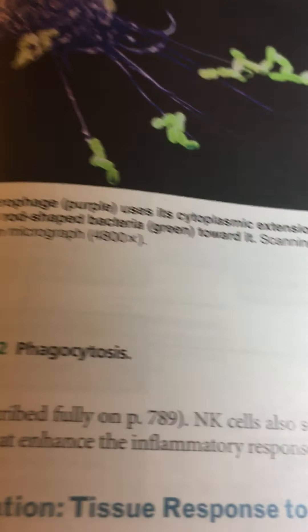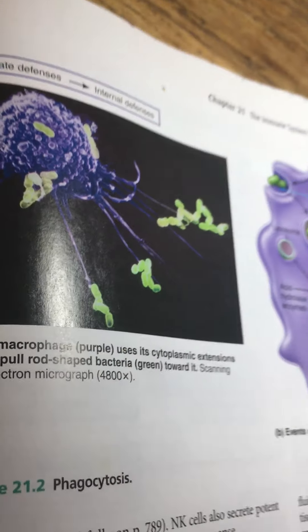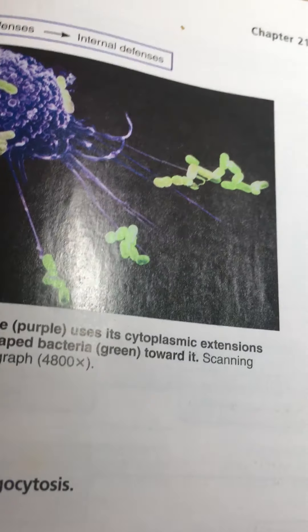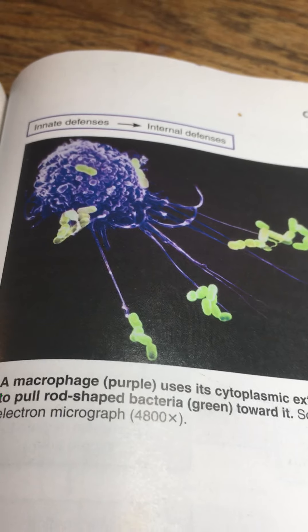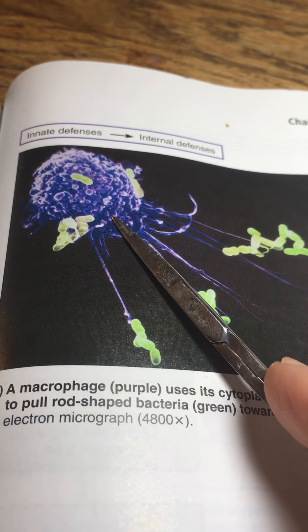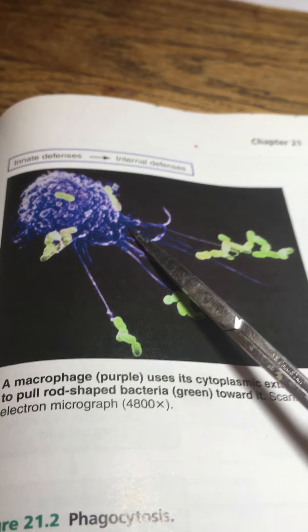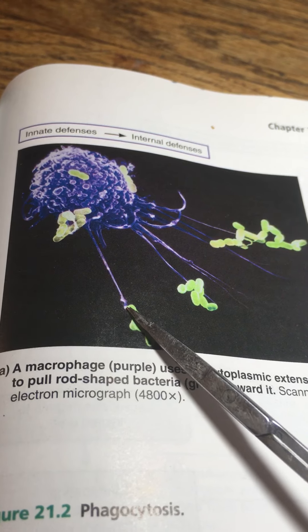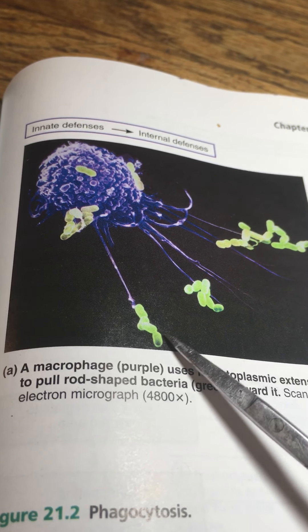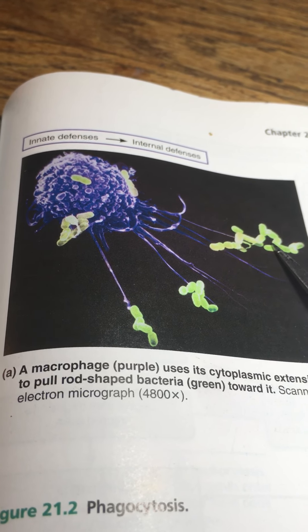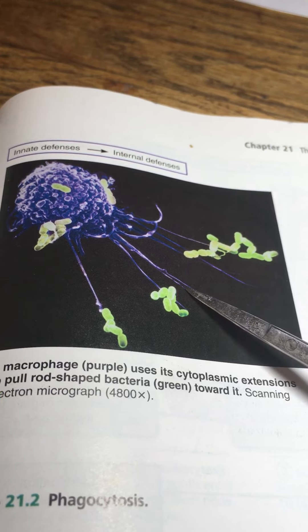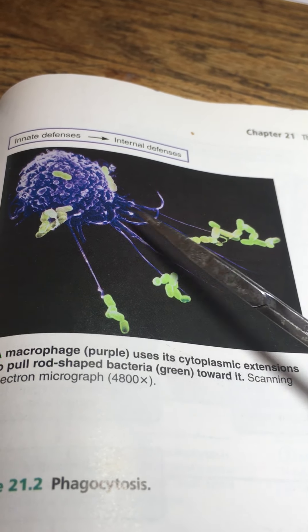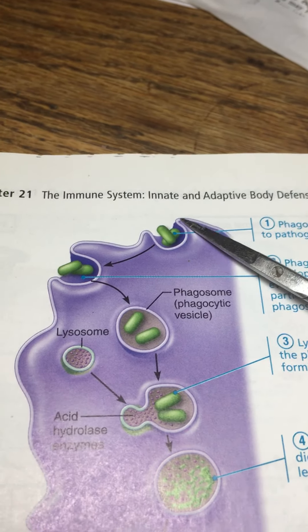Let's take a look at phagocytes. Here we have a fabulous scanning electron microscope image at 4,800 power — something we're not going to enjoy under the light microscope. You can see that this cell is literally just tossing out a little pseudopod and grabbing bacteria — a little buffet of bacteria to enjoy right there.